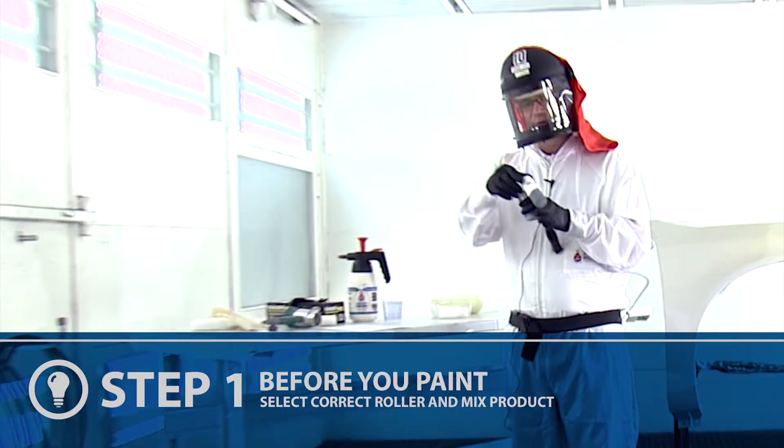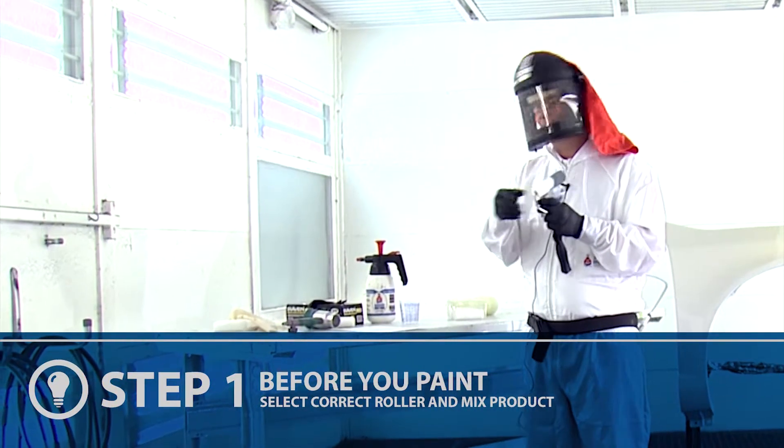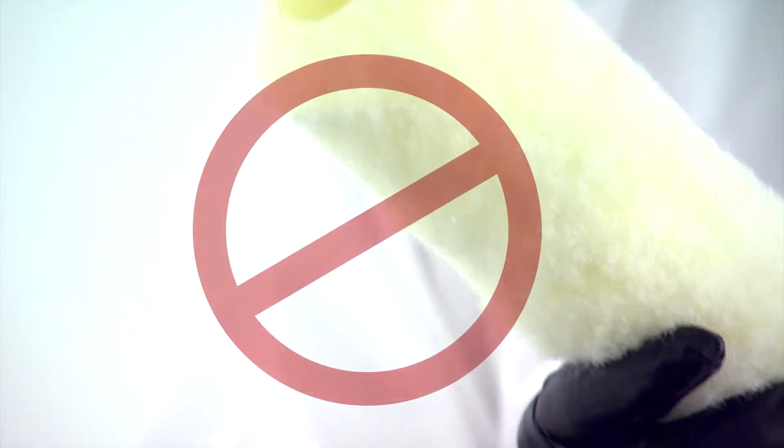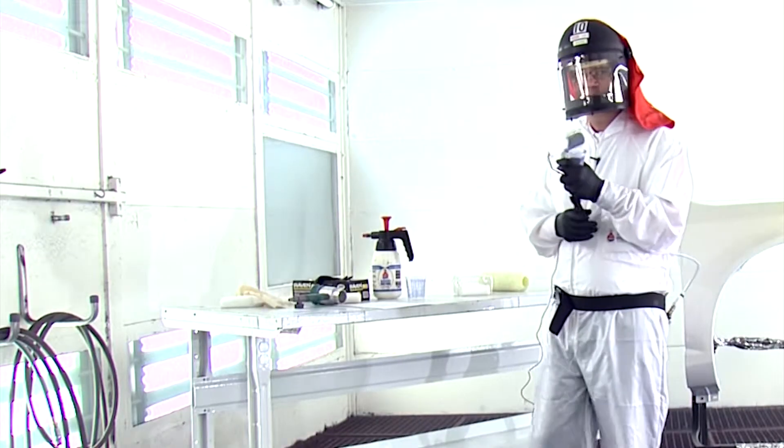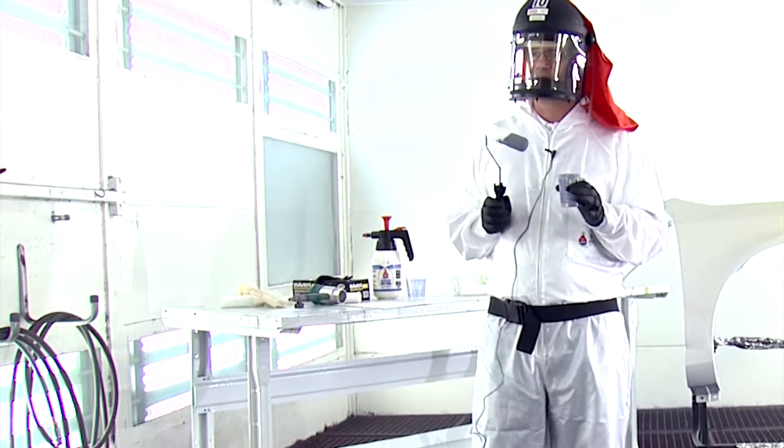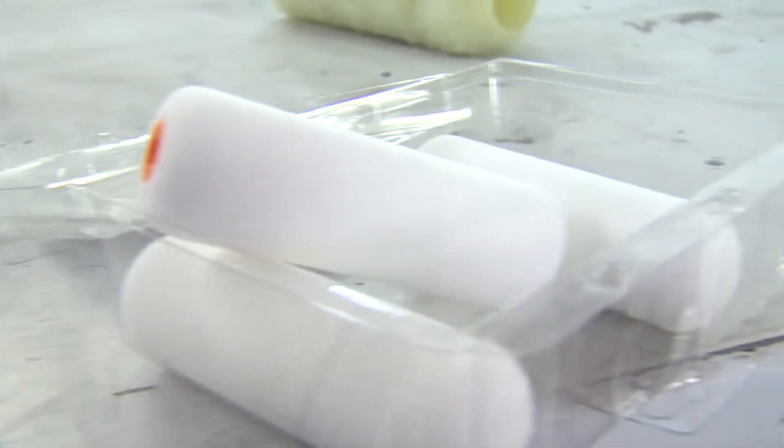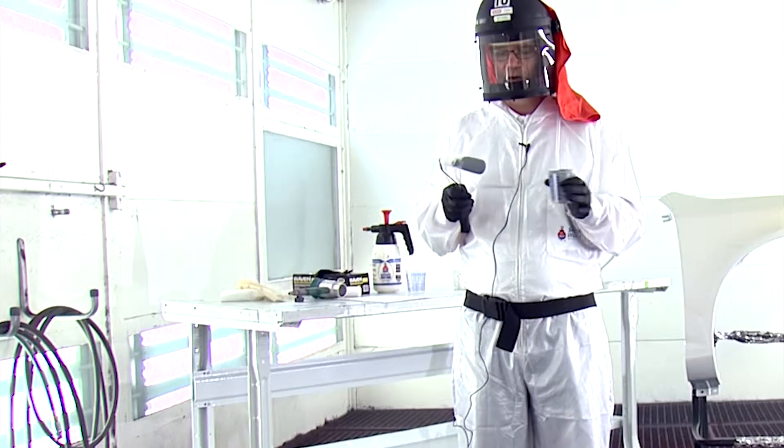Now when you roll, you cannot select just any kind of roller. You can't go to any home store or hardware store and buy just any type of roller. They don't all work. You have to buy one that's specifically designed for solvent borne paints. You can pick these up at any Sherwin-Williams Automotive branch or independent distributor of Sherwin-Williams Automotive Finishes.